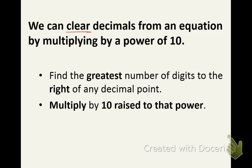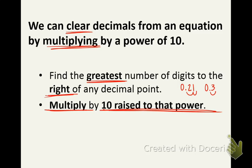We can clear the decimals from an equation by multiplying by a power of 10. The way that we're going to do this is we're going to find the greatest number of digits to the right of any decimal point. So, an example of this would be .21 and .3. The first term, .21, has two decimal places, and the .3 only has one. So, the greatest number would be two digits versus one. Now, we're going to multiply by 10 raised to that power. In this situation, we have 10 to the second because that 2 comes from the greatest number of decimal points and that would be just 100.